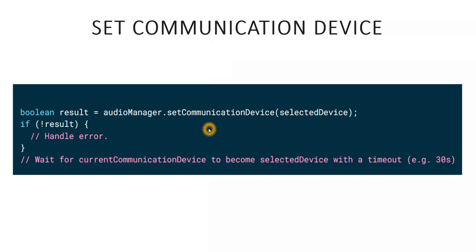The fourth step is to set the communication device. After finding a compatible device, use the setCommunicationDevice API to set the device you wish to route audio to — the device where you want to listen to audio during the VoIP call. Checking the result informs your app if AudioManager is trying to set the device or if it encountered an error. Once the BLE audio device is set, when placing a call the audio streams will have the correct audio routing.